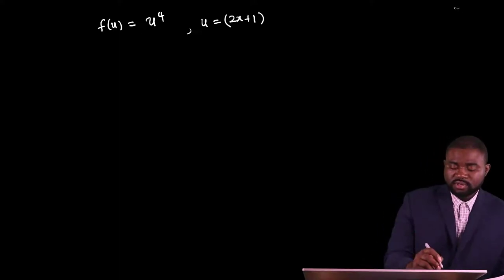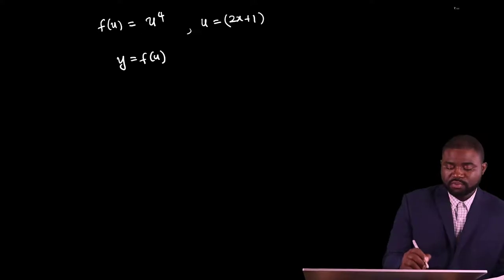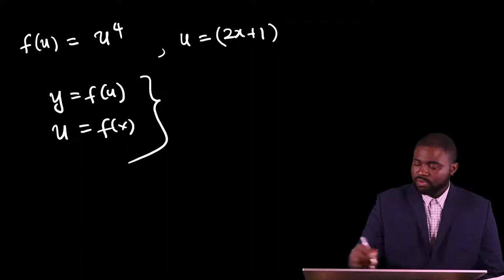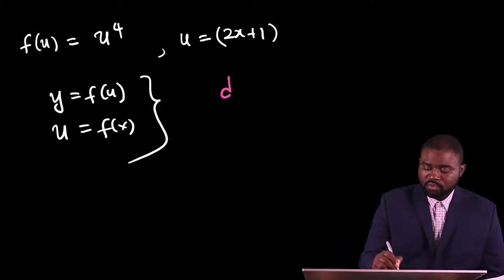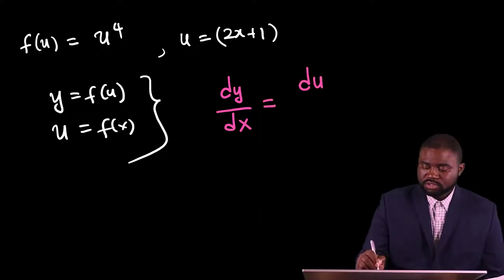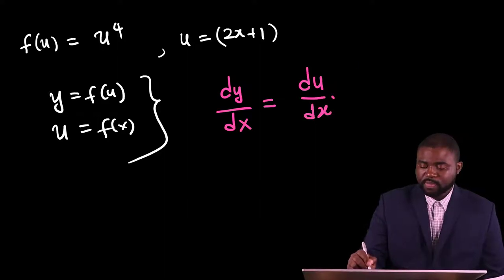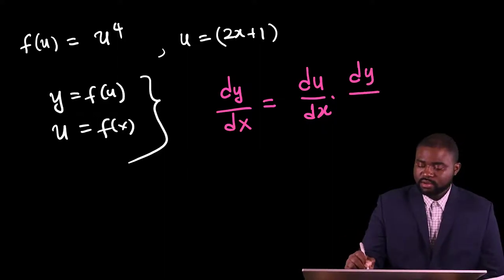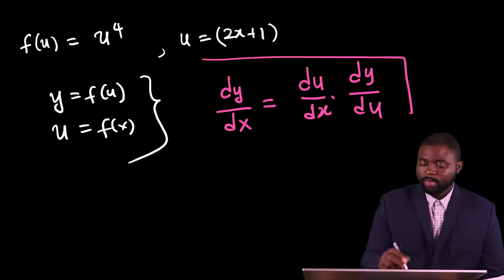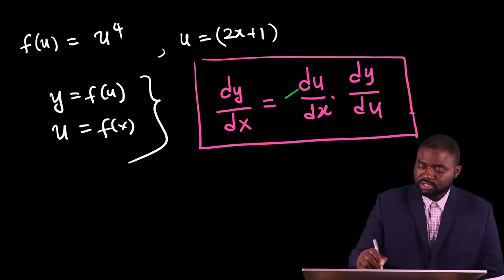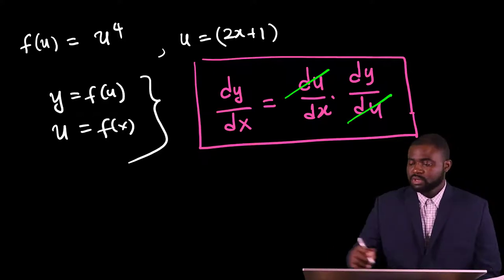So in general, if y is a function of u and u is a function of x, we can simply use a division trick. dy/dx is equal to du/dx multiplied by dy/du. What do you notice? We have really not changed anything because the u cancels. Let me give you an example.